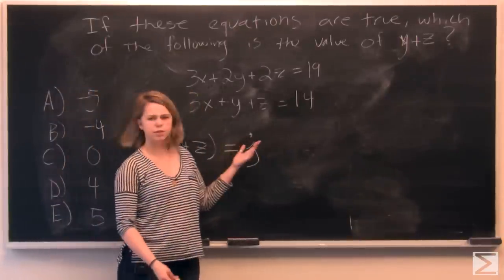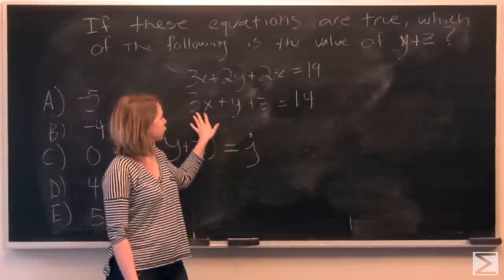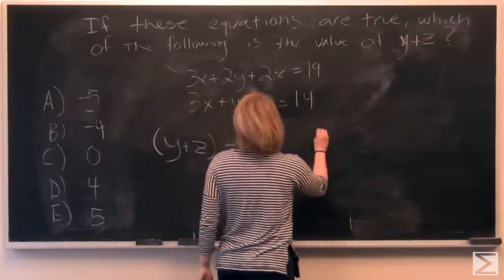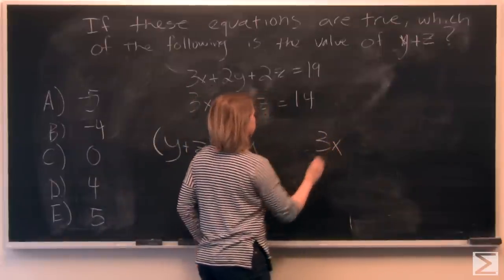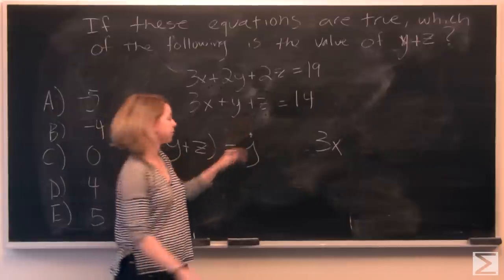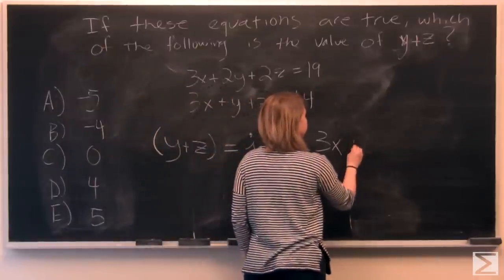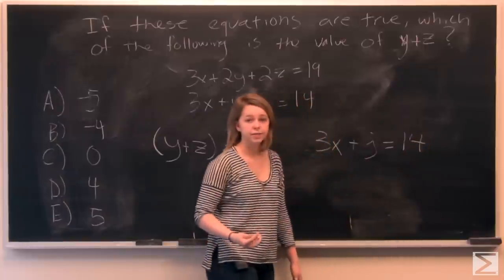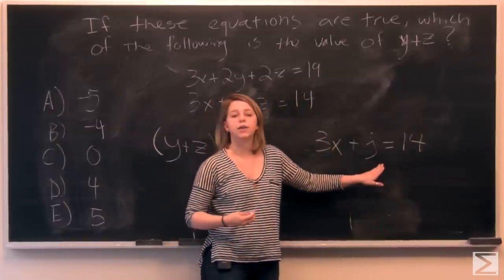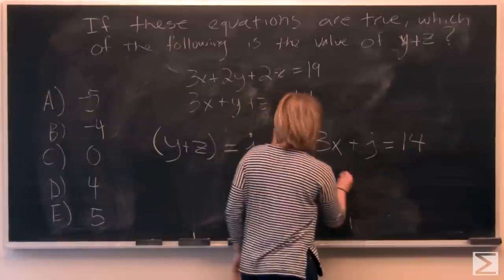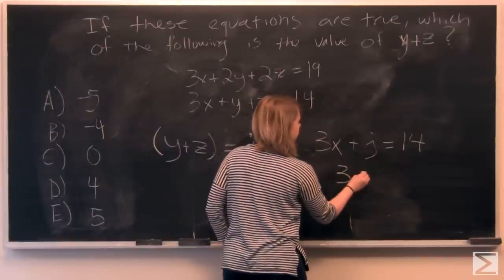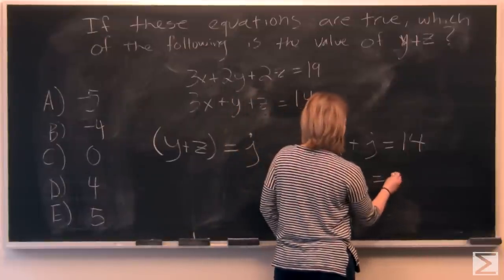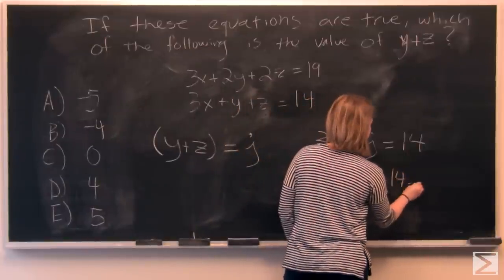Now we can start substituting a little bit. So 3x plus y plus z equals 14. We can substitute in j for y plus z. So we'll have 3x plus j equals 14. Now what we're looking for is the value of j. Remember that. And let's simplify here to isolate 3x. 3x is equal to 14 minus j.